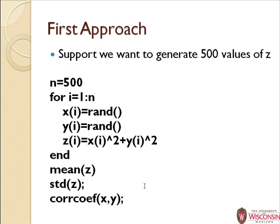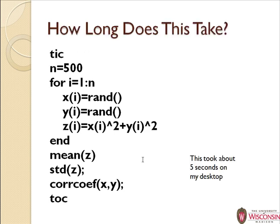So how long does this take? I can use my watch, but it's better to have MATLAB do it. There's a pair of commands called tic and toc. I put tic at the beginning to start a timer, then run through all the code, and end with toc. When toc is called, it gives you the CPU time since tic was called. For 500 triplets, it takes about 5 seconds on my fairly old desktop.